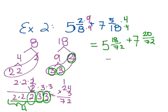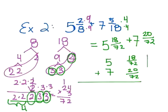And I'm going to go ahead and set them up, one on top of each other. Whole numbers together. Fractions together. And I'm going to go ahead and add straight down. So, 18 plus 20. That gives me 38. Out of 72.